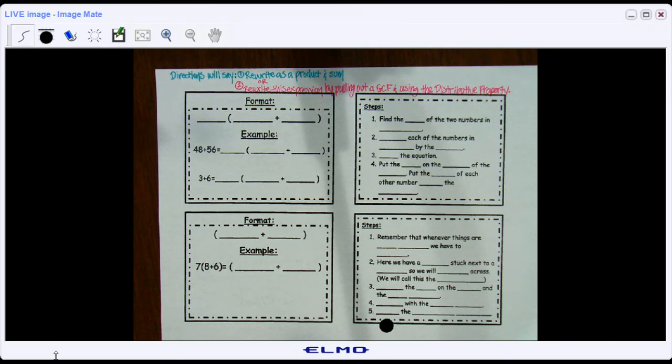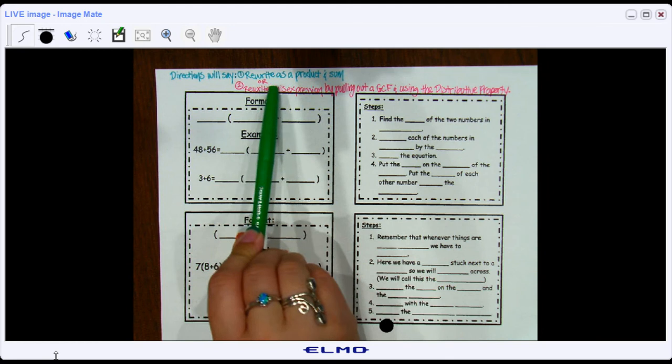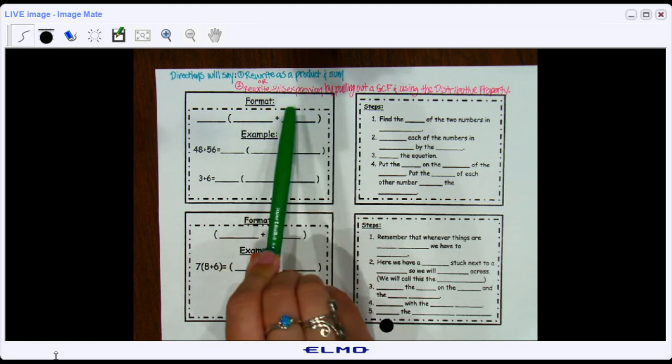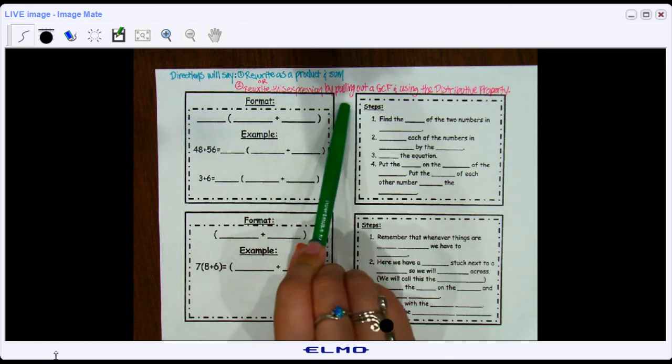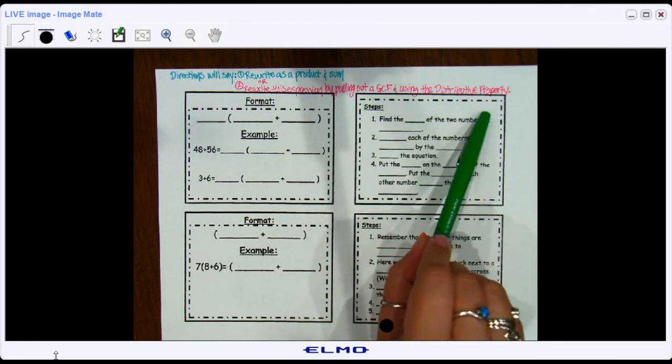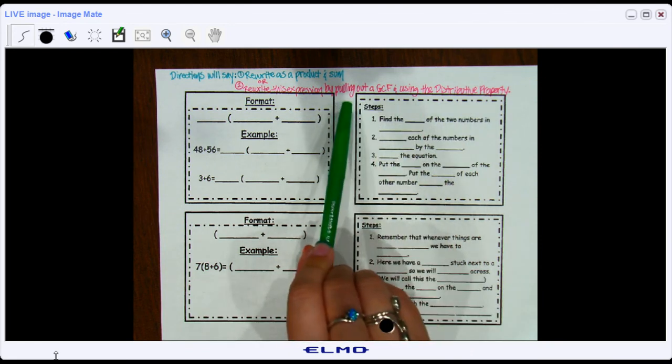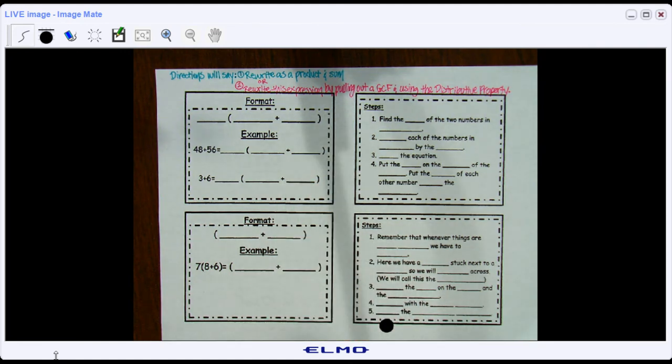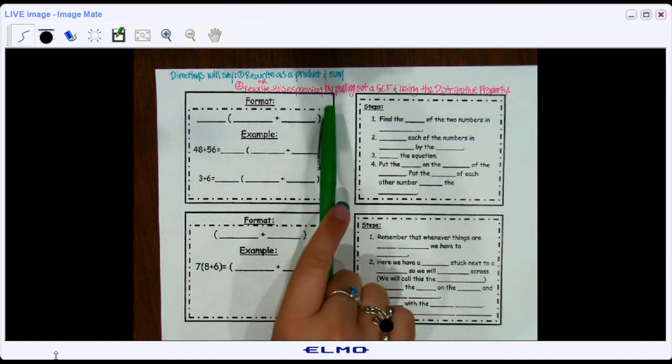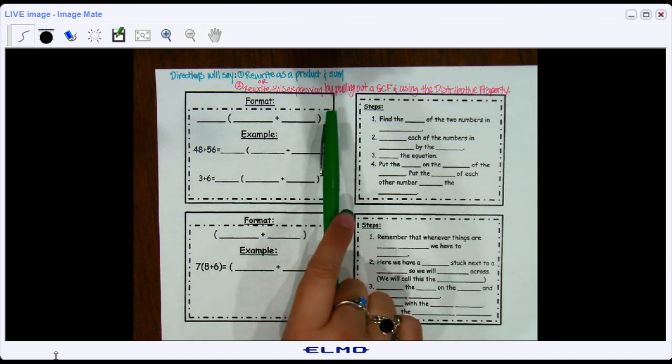First off, to know that this is what it's asking you to do, you'll see the directions written as something like this: rewrite this expression as a product and a sum, or rewrite this expression by pulling out a GCF and using the distributive property, or use the distributive property and pull out the GCF to rewrite the expression. I think you're seeing the gist of this. Normally they'll just say pull out a GCF and we do what we've done in the past, but if you see these types of phrases, we're going to do what we're about to do in just a second.